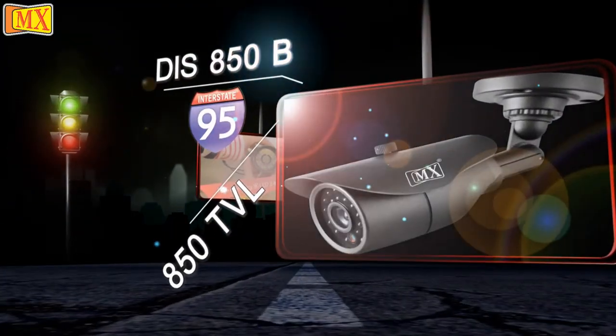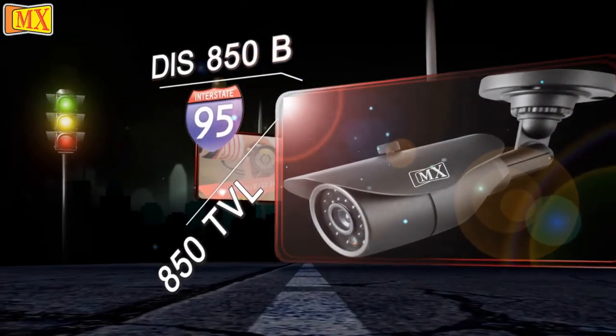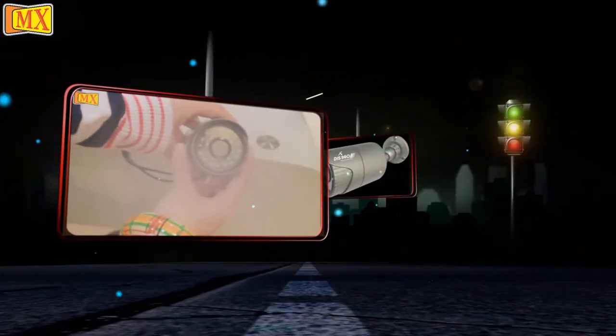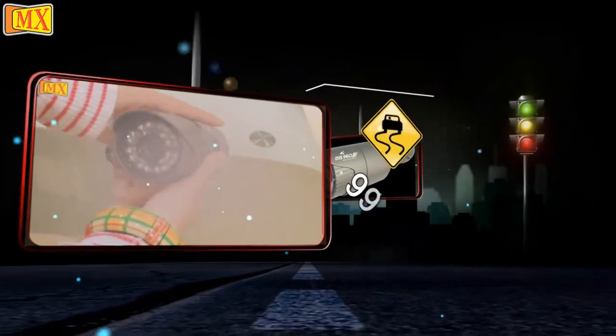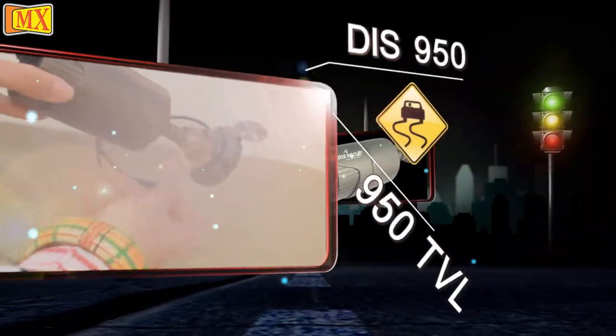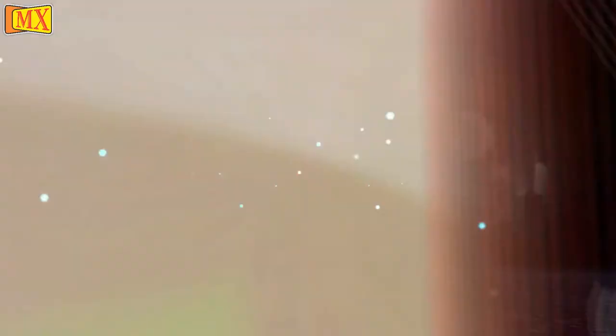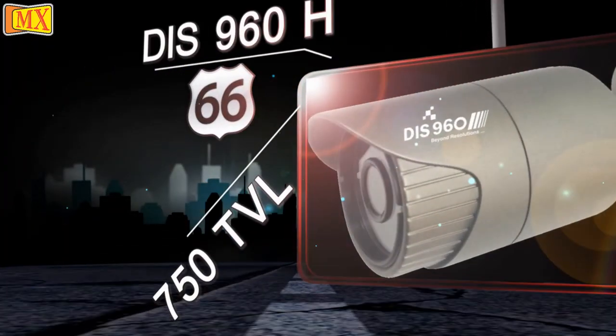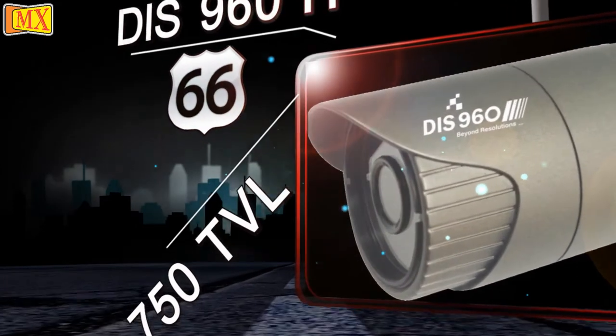DIS-850 with resolution 850 TV lines. DIS-950 with resolution 950 TV lines. DIS-960 with resolution more than 750 TV lines.